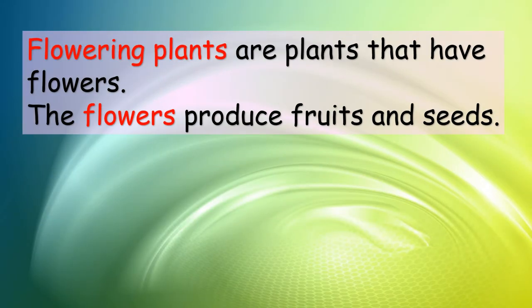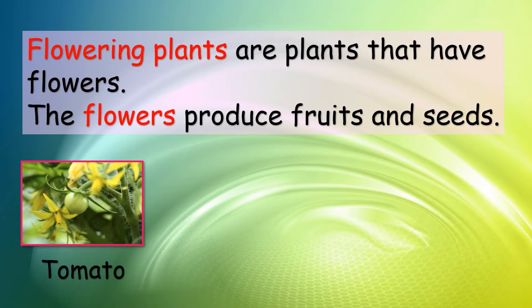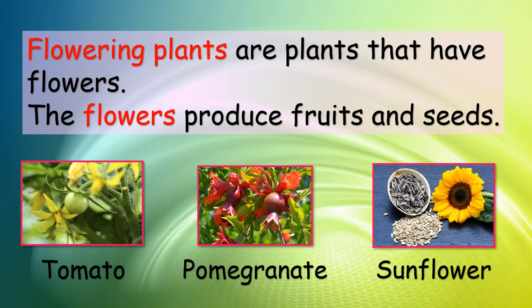Flowering plants are plants that have flowers. The flowers produce fruits and seeds. For example, tomato has flowers and the flowers grow and develop into fruit, and inside the fruit are seeds. Pomegranate also has flowers that grow and develop into fruits with seeds inside. Sunflower has seeds used for reproduction. Do you understand?